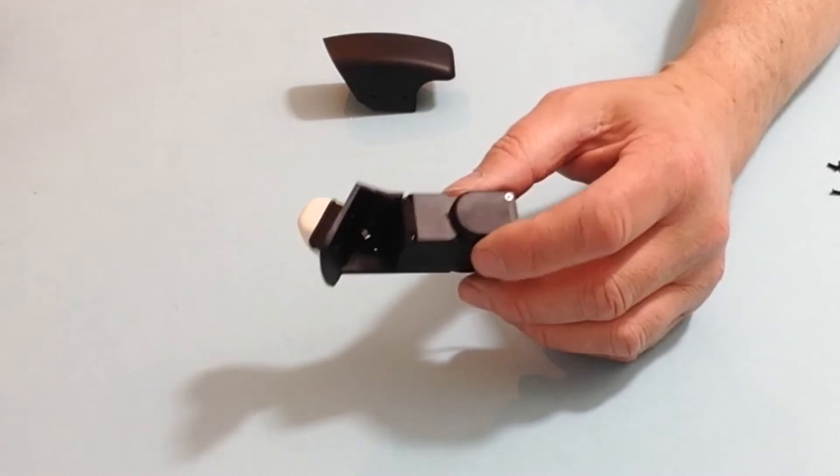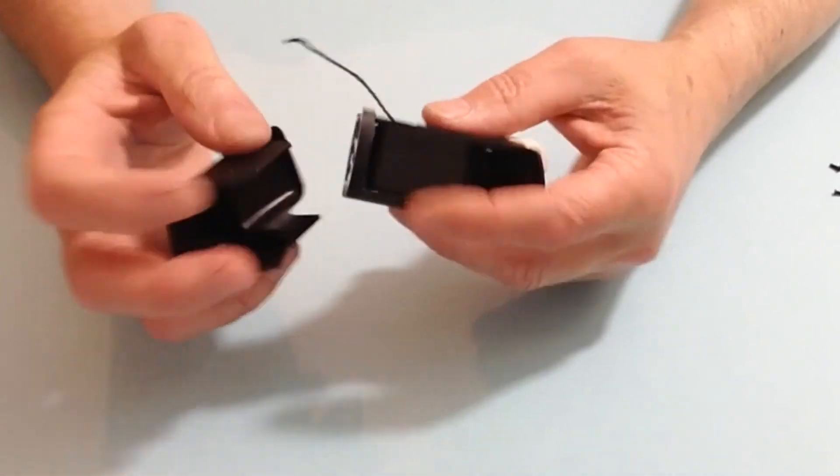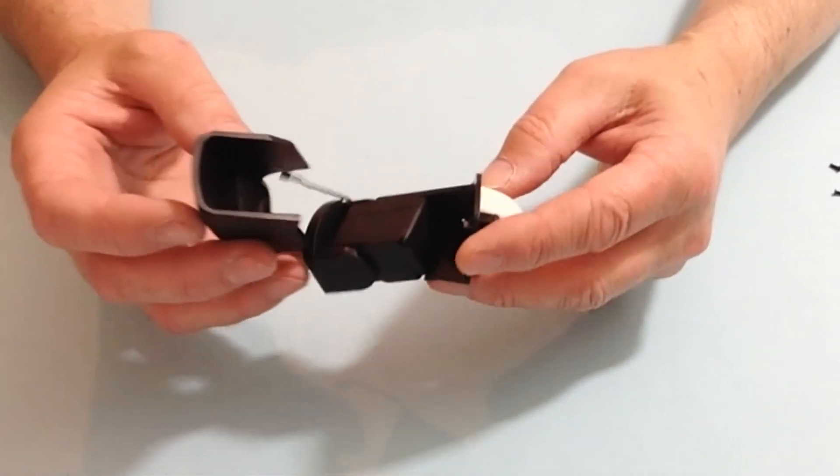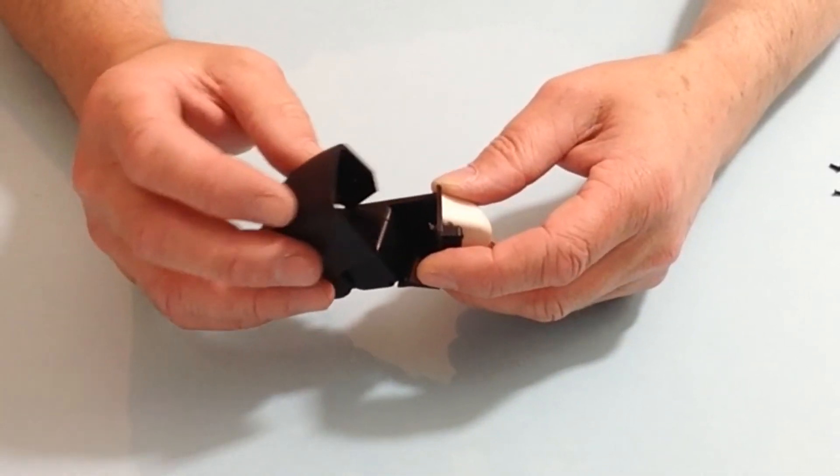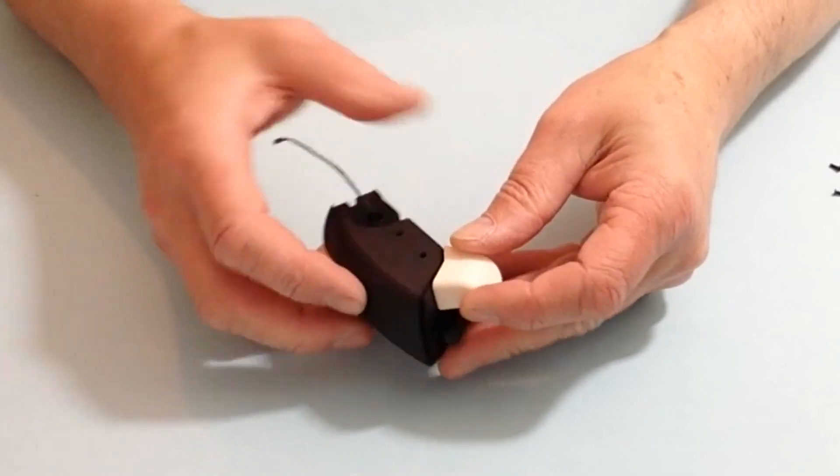Once you've done that, next we are going to be putting the cover on. Just make sure once again that you have got the assembly alright and then line up the two holes either side like so.